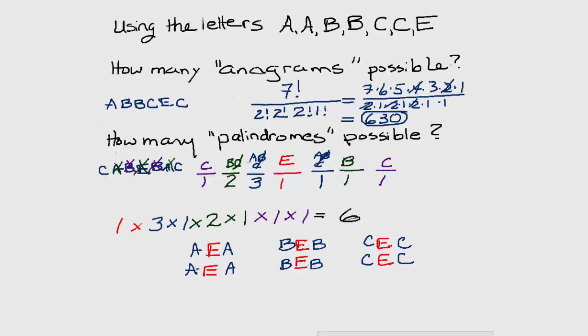If you think about it, it makes sense. We know that E has to be in the middle. Next to it, we can either have A's or B's or C's. Once we've chosen that letter, there's only two possibilities remaining.